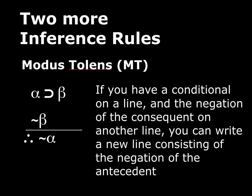Modus tollens — there's a typo, it should be two L's, sorry about that. This rule says that if you have a conditional, and if you have the negation of the consequent of that conditional on another line, then you can derive a new line consisting of the negation of the antecedent of that conditional. So where modus ponens requires a conditional and the antecedent, here you need a conditional and the negation of the consequent.